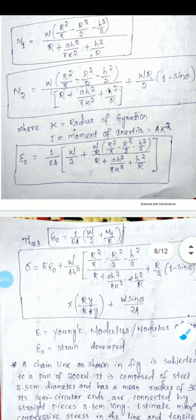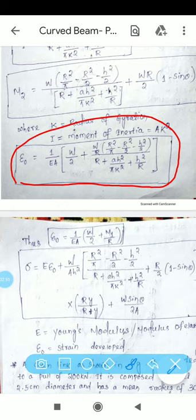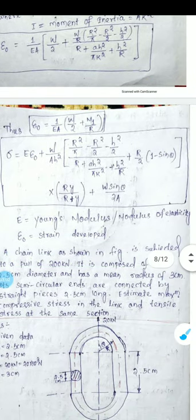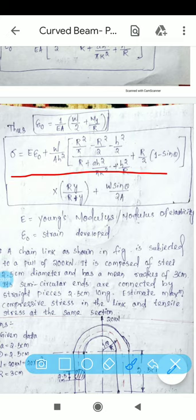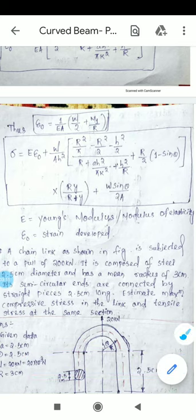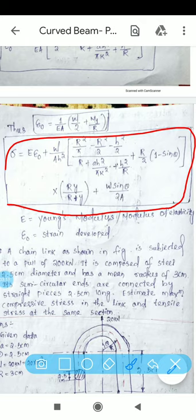Next is how to calculate the strain developed in the chain link. Epsilon 0 is the strain developed inside the curved beam. This is the final expression for calculating the stress developed inside the chain link.